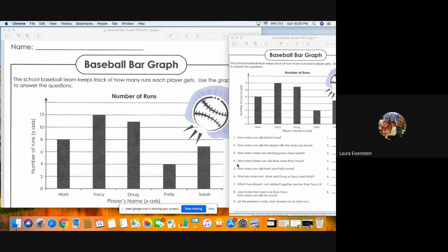Number four is how many fewer runs did Mark have than Tracy? So that's a less than problem. Exact same strategy. Figure out how many runs Mark had, how many Tracy had, and then you take the bigger number and subtract by the smaller number.